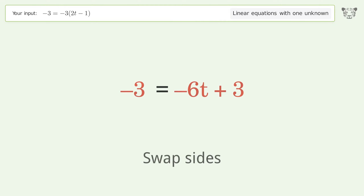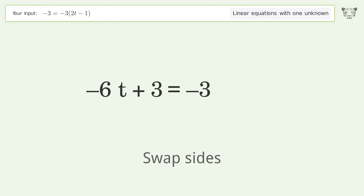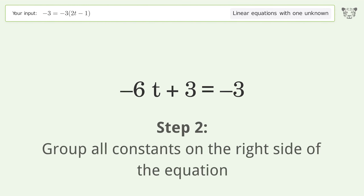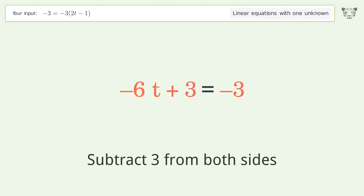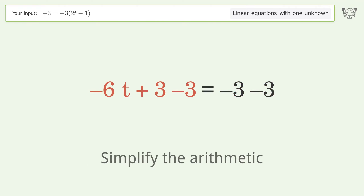Swap sides. Group all constants on the right side of the equation by subtracting 3 from both sides, then simplify the arithmetic.